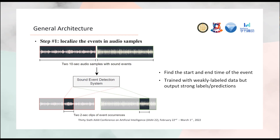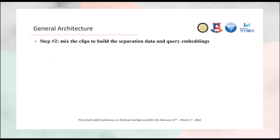But here we face a problem: the dataset does not provide any localization or strong labels. So how can we use a model trained with wiki-label data but output strong label predictions? We will discuss this in the later slides.